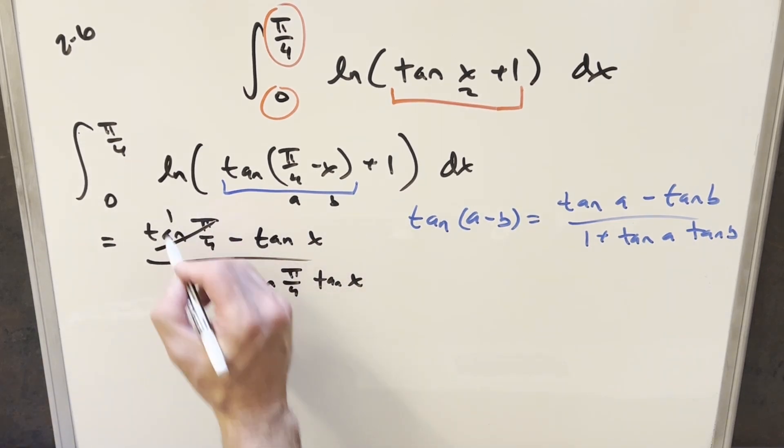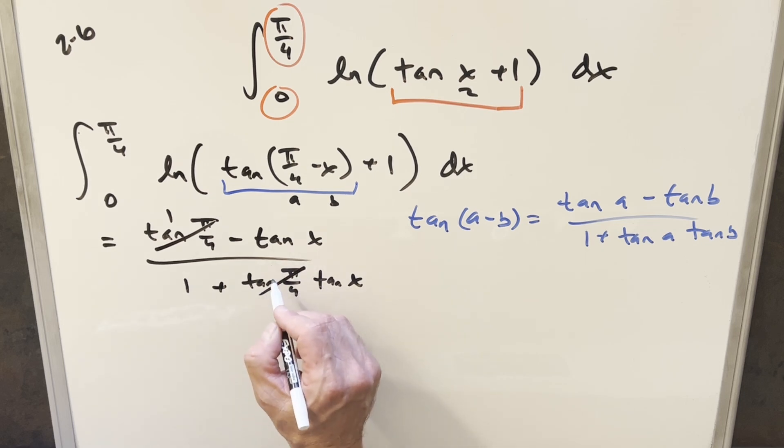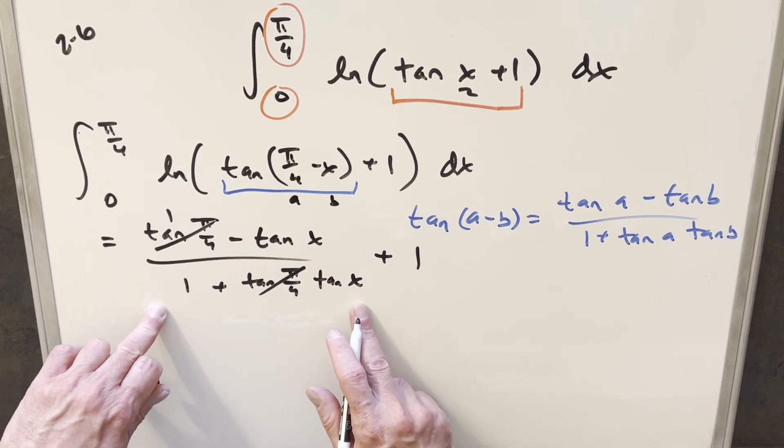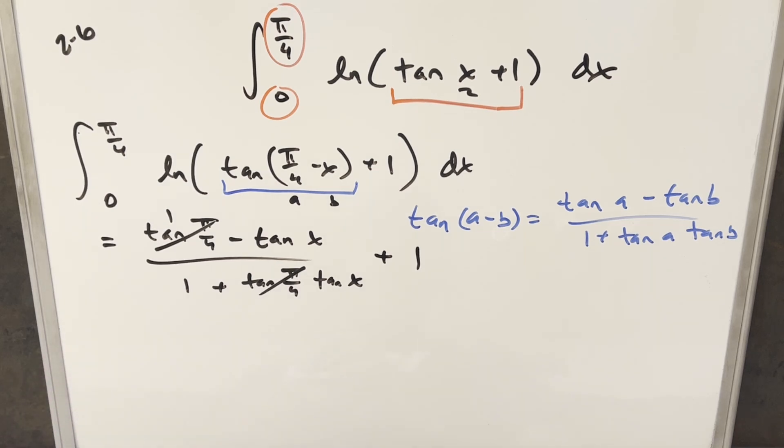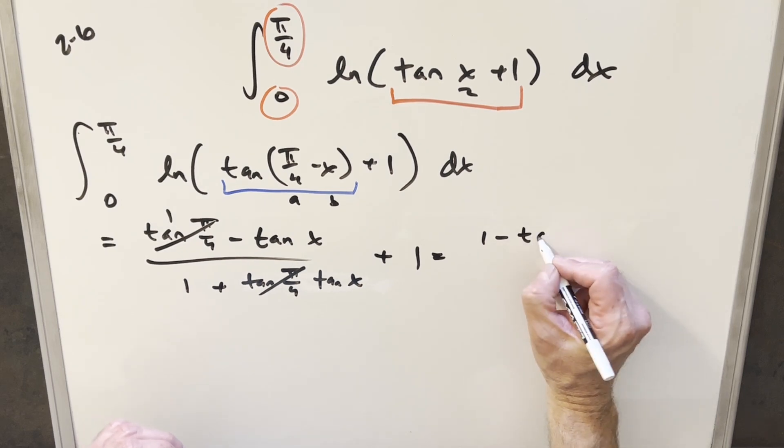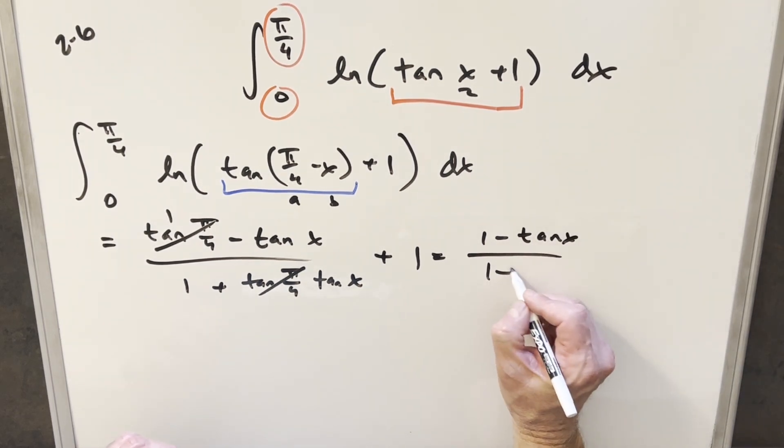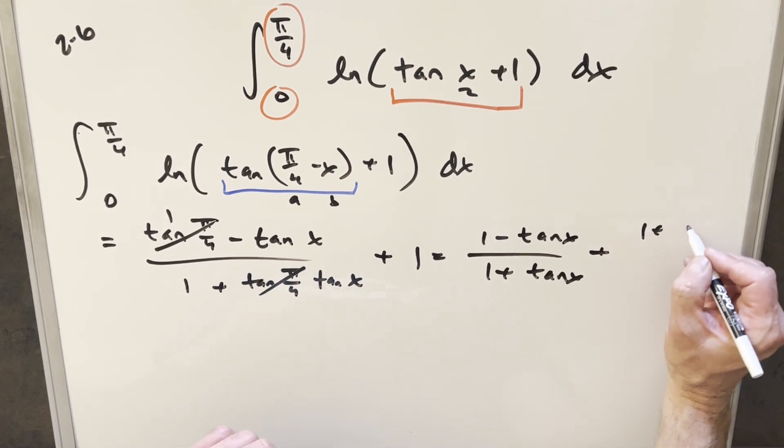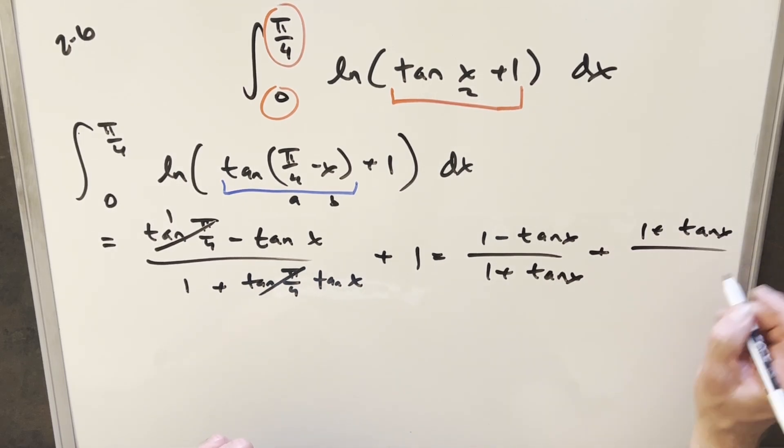The tangent of pi over four is going to be just one. And so we can do that here as well. So that one's just going to go away. And then what I want to do is take this plus one and bring this in here and see if we can get a common denominator and simplify this even further. So what's going to happen when we do this, we'll have, this is going to be for this first one, one minus tan x over one plus tan x. And then for this one here, I'll just write it as one plus tan x over one plus tan x.